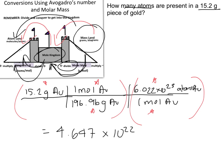And that's going to give us an answer of 4.647 times 10 to the 22nd. Now, if we account for significant figures, we notice that our smallest number of sig figs is coming from our given, which is three sig figs. So we're going to end up with 4.65 times 10 to the 22nd as our numerical answer.